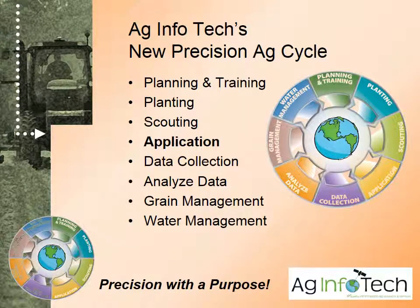AgInfoTech likes to describe our precision ag process as a cycle. It is continuous — a precision ag wheel, as we call it. The section of the wheel that we want to talk about today is application.